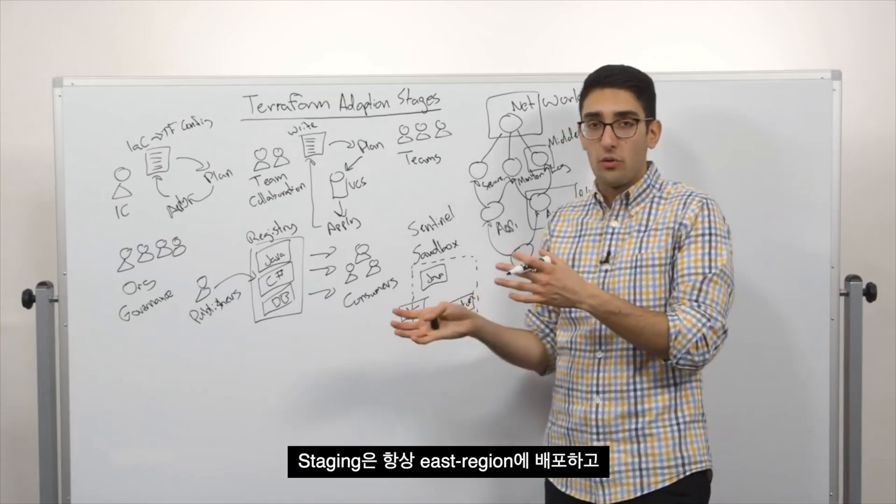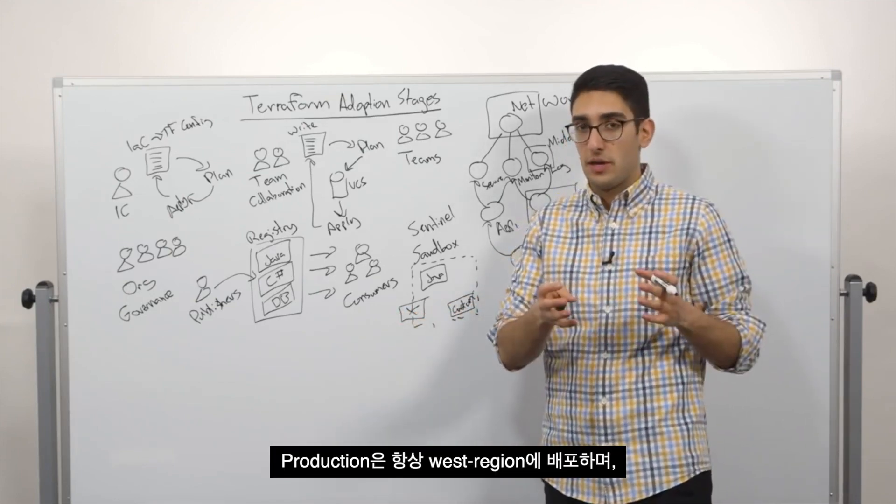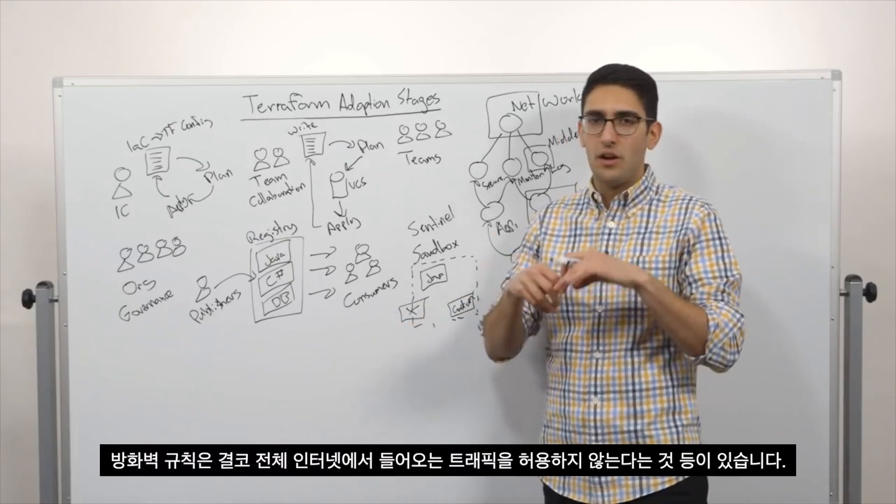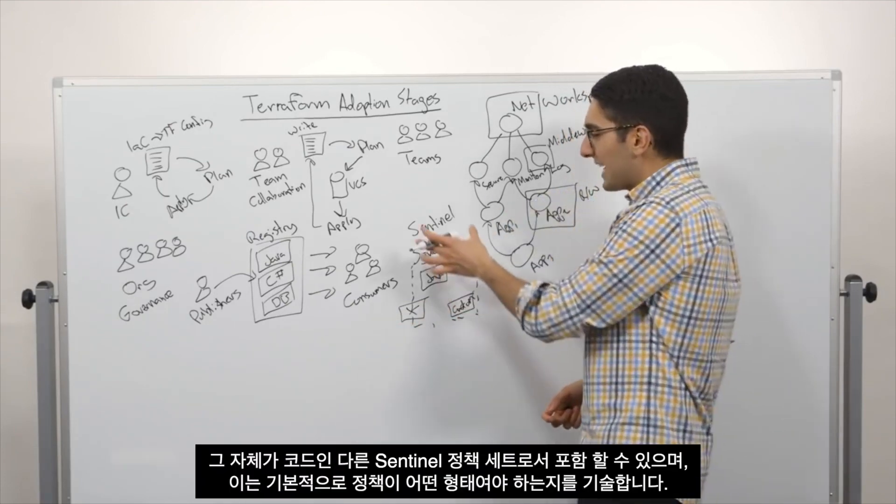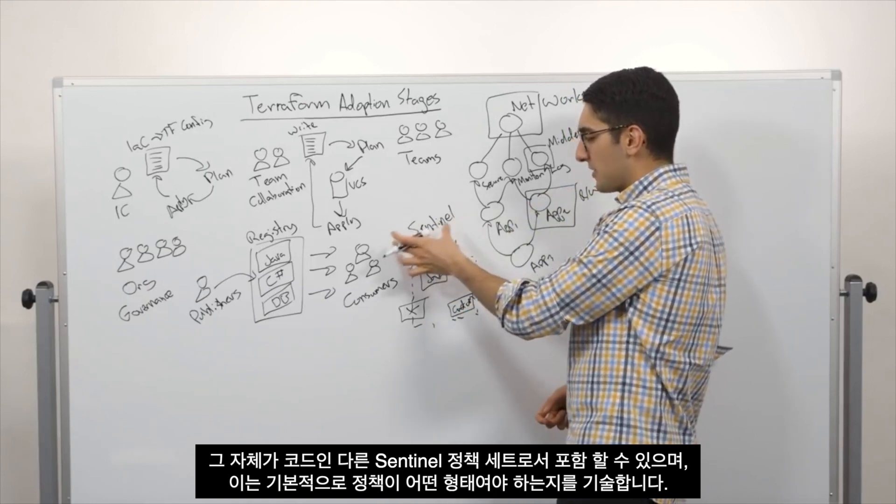And so when we talk about policy, this could be things like staging always deploys to the East region and production always deploys to the West region. And our firewall rules must never allow traffic from the entire internet.